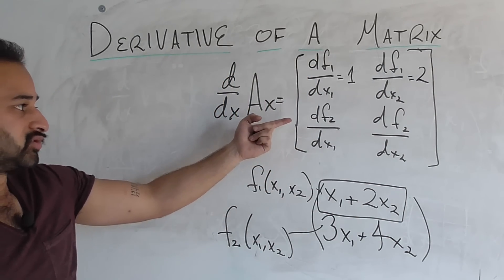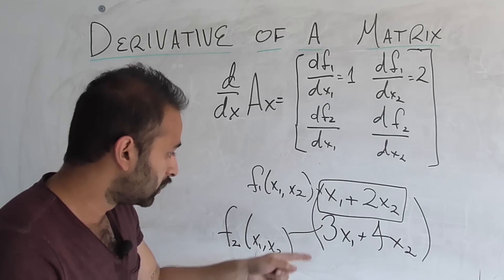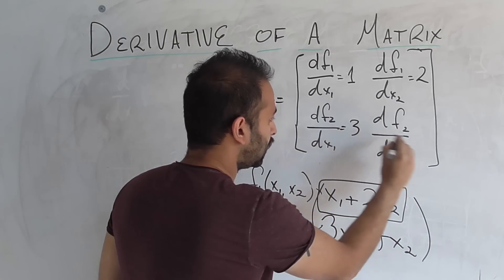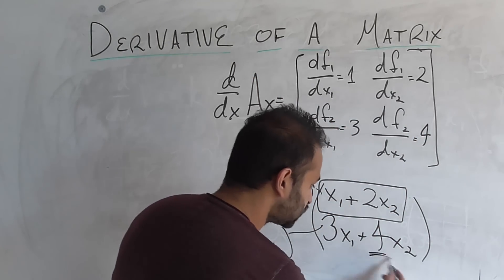The next question is, what's the derivative of f2, the second function down here, with respect to x1? That's 3, and then this last one will be 4, because it's the derivative of the second function with respect to x2.